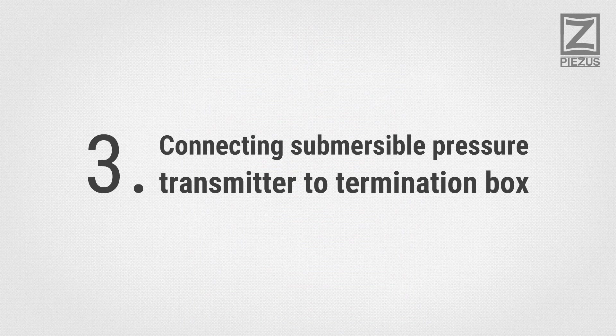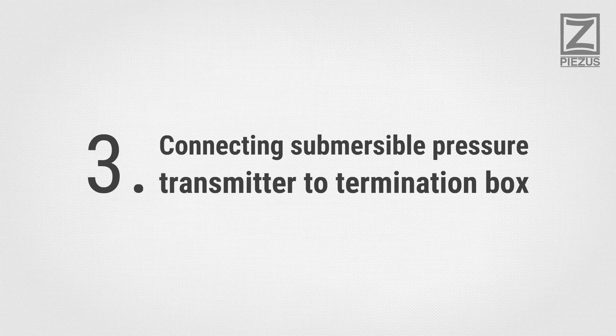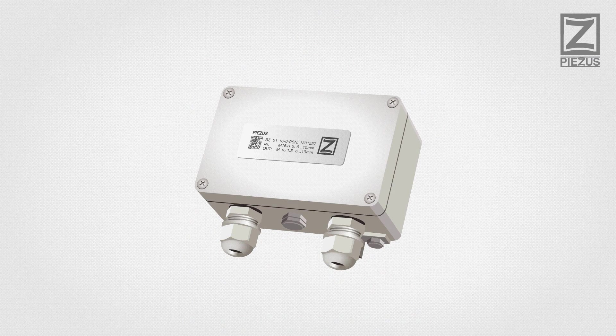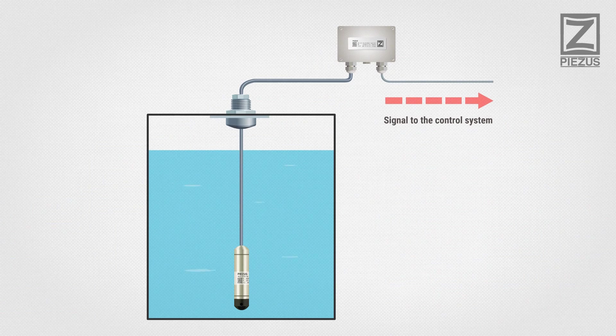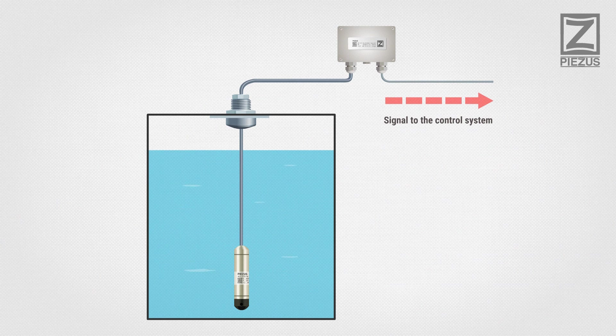Connecting Submersible Pressure Transmitter to Termination Box. Termination Box is an option that simplifies connection and provides additional protection to the pressure transmitter. Termination Box is usually placed in proximity to the submersible pressure transmitter installation location.